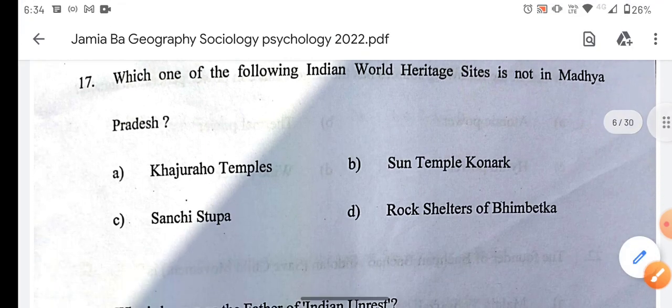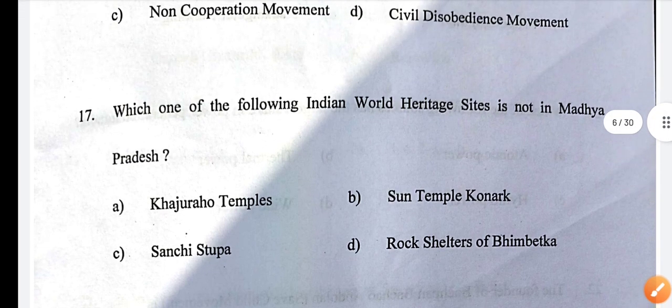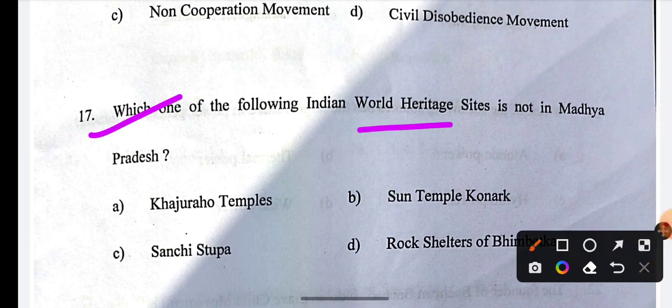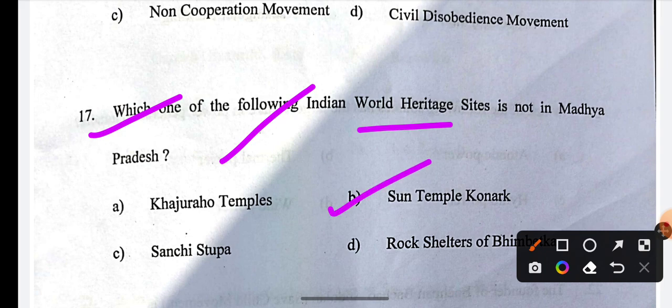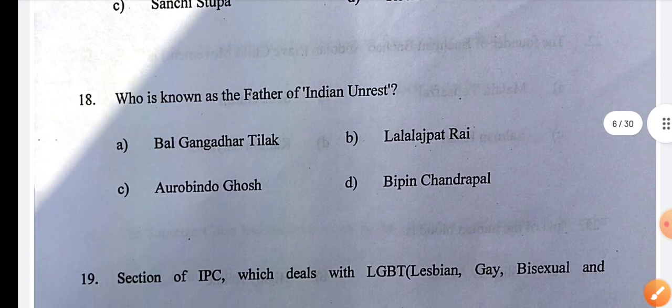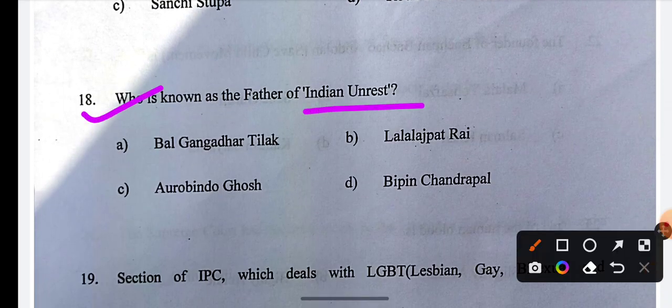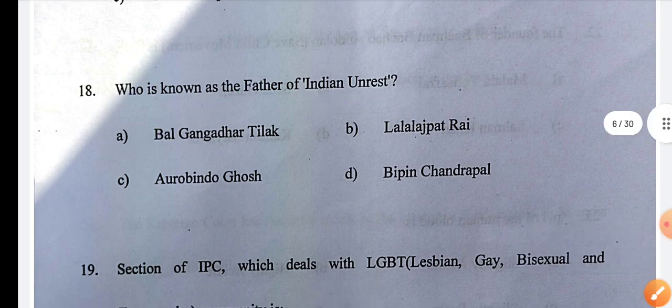Next question: Which of the following Indian heritage site is not in Madhya Pradesh? The correct answer is Konark temple. Next: Who is the father of Indian unrest? Question 18, the answer is A.